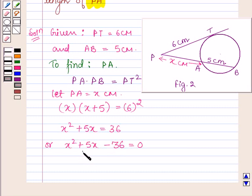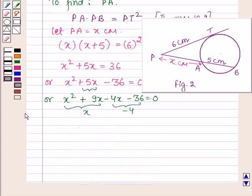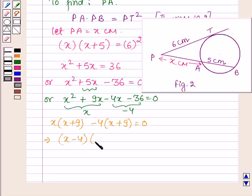Now by splitting the middle term, it can further be written as x squared plus 9x minus 4x minus 36 is equal to 0. Taking x common from the first two terms and minus 4 common from the last two terms, we have x into x plus 9 minus 4 into x plus 9 is equal to 0, which further implies that x minus 4 into x plus 9 is equal to 0.